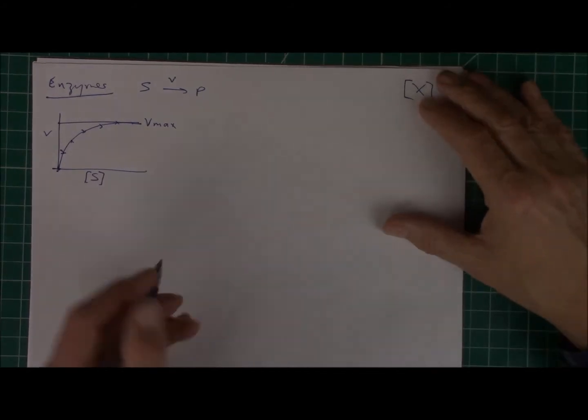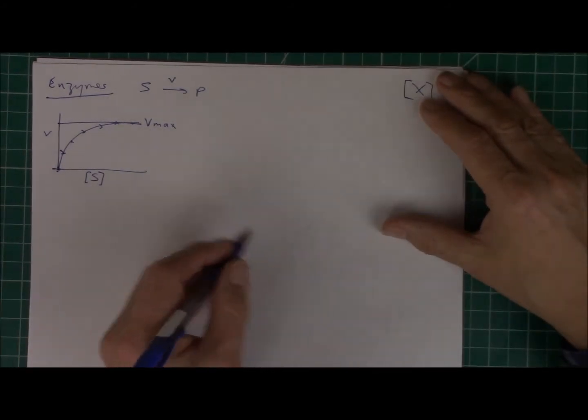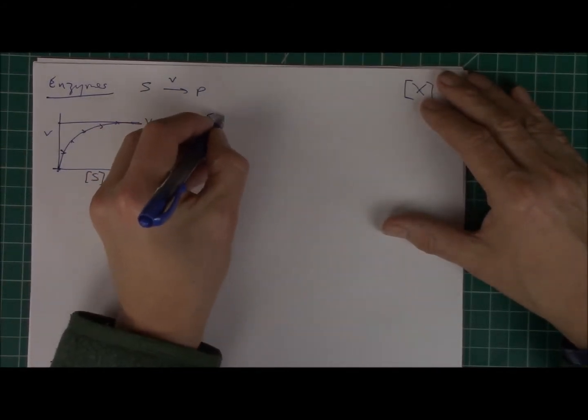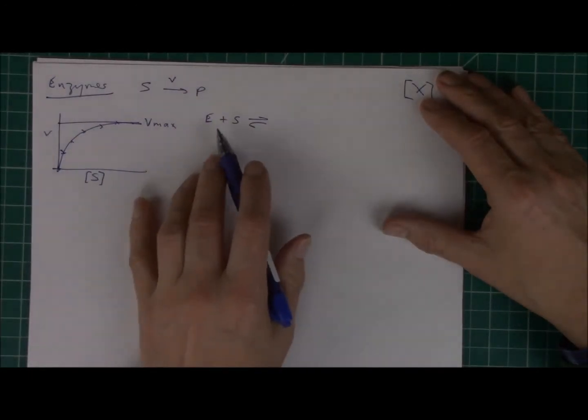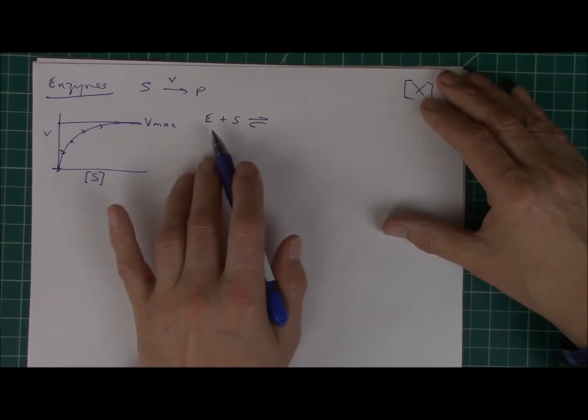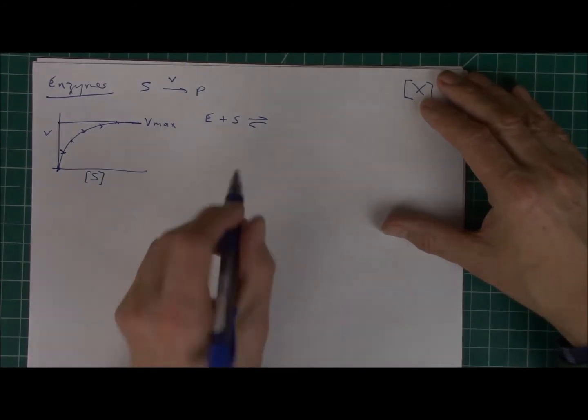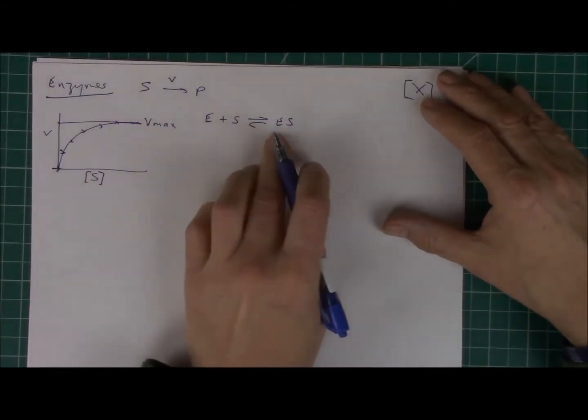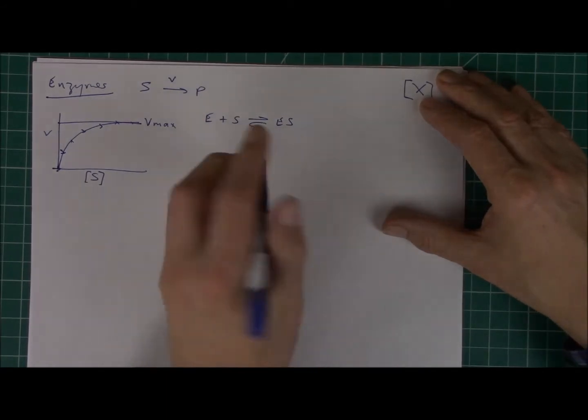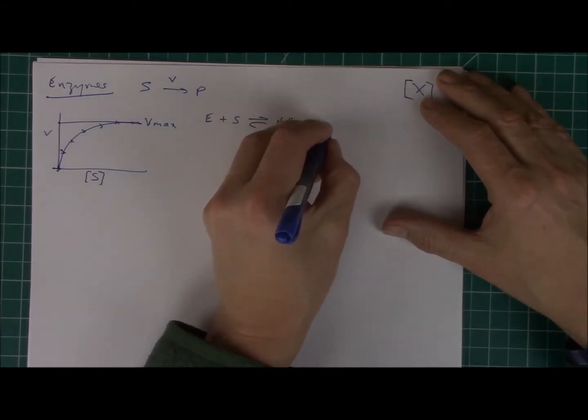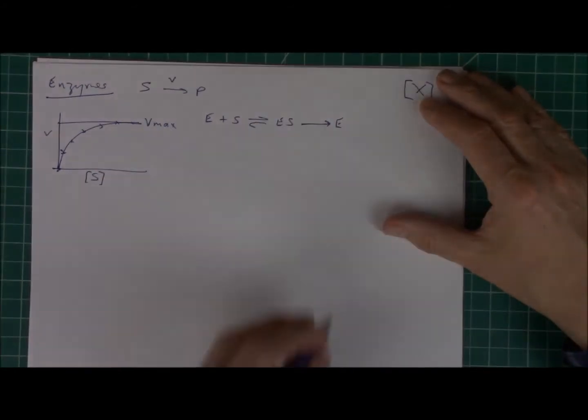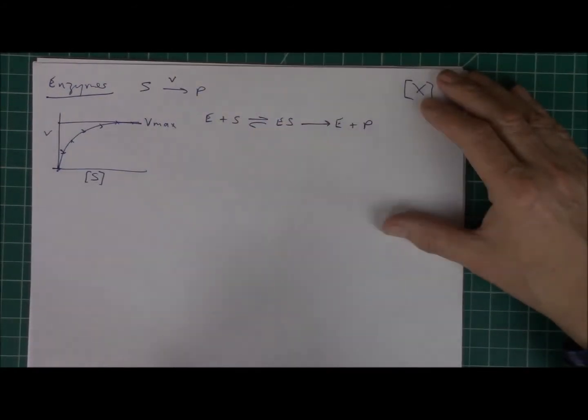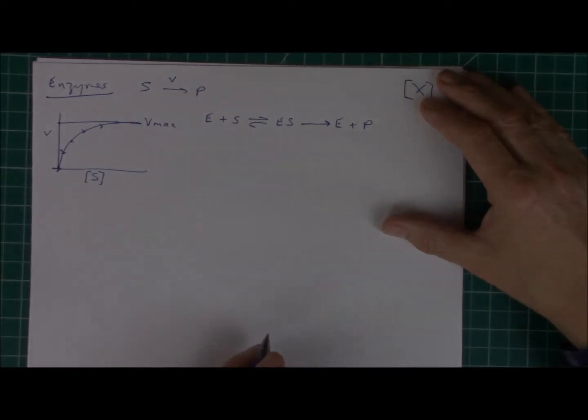Let's begin, then, by writing out the enzyme mechanism that is used to describe enzyme catalysis. So the enzyme mechanism involves free enzyme binding to free substrate to form an enzyme-substrate complex, and then we assume that this enzyme complex undergoes some transformation that releases free enzyme again, plus now the product.